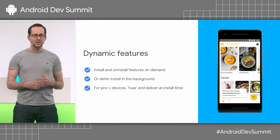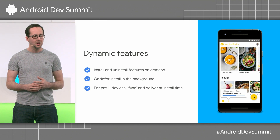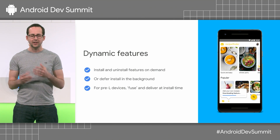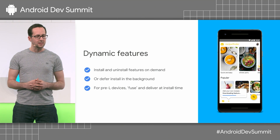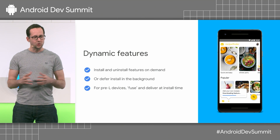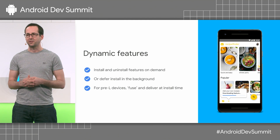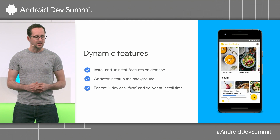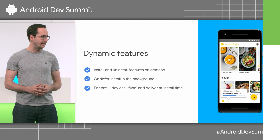Dynamic features can be installed on demand when the user requests them. Or you can choose to defer installing them to a later time when the app goes to the background. For pre-L devices, which don't support on-demand features, we can fuse the modules into the main app so they're delivered at install time. All of these use cases are supported in production today, with millions of users benefiting already.